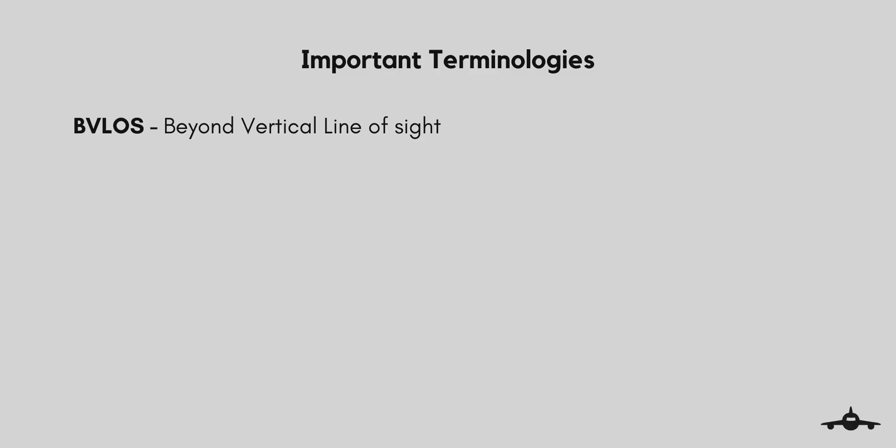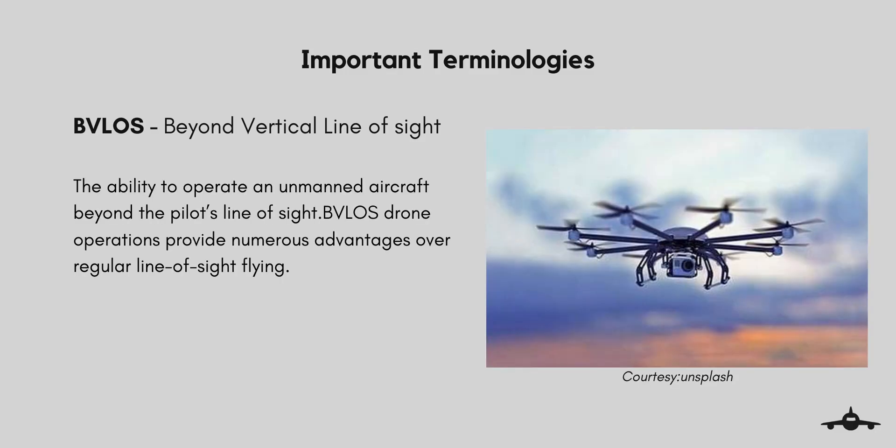BVLOS — Beyond Visual Line of Sight — is the ability to operate an unmanned aircraft beyond the pilot's line of sight. BVLOS drone operations provide numerous advantages over regular line-of-sight flying.